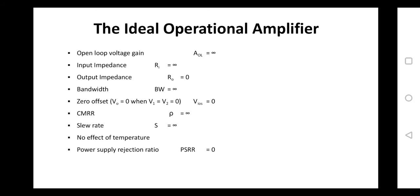The output impedance of an op-amp should be as minimum as possible, approximately equal to zero. The op-amp must also have the capability to allow all frequency ranges from minimum to maximum. Bandwidth specifies the difference between upper cut-off frequency and lower cut-off frequency, so the bandwidth of an op-amp should be infinite, indicating it must handle as many frequencies as possible.